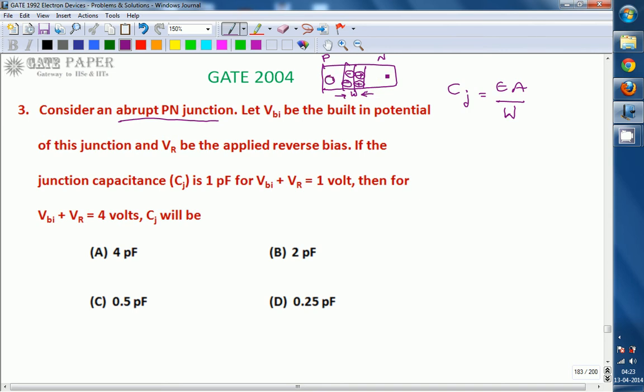This is first plate and this is second plate. You can think it is a parallel plate capacitor with the distance between the plates as W. So Cj is the parallel plate capacitance equation, epsilon A by D. D in this case is W.